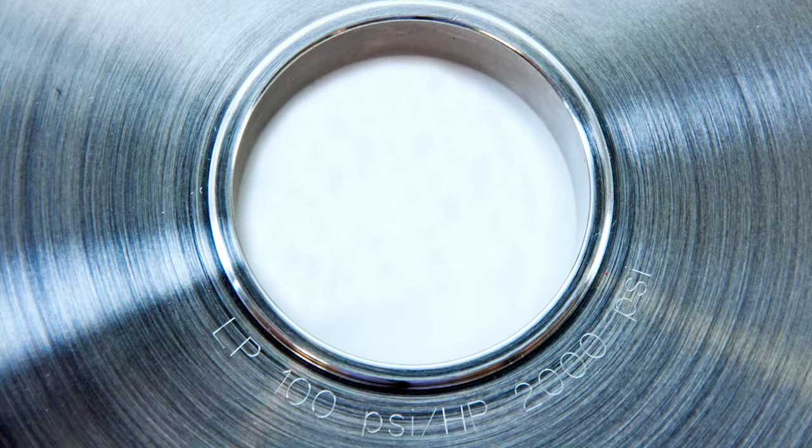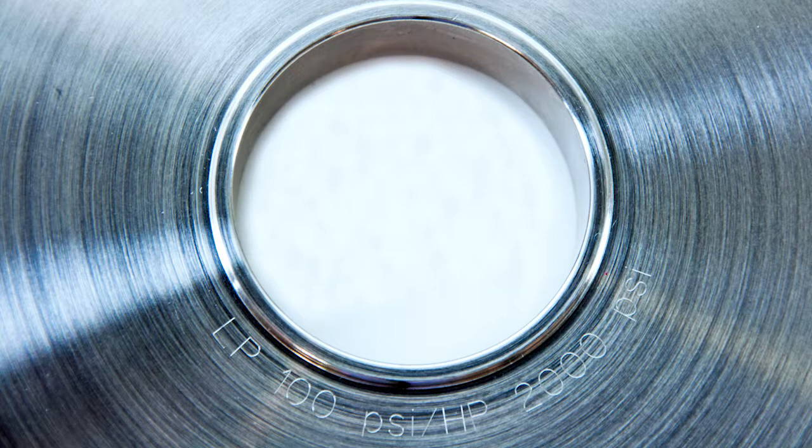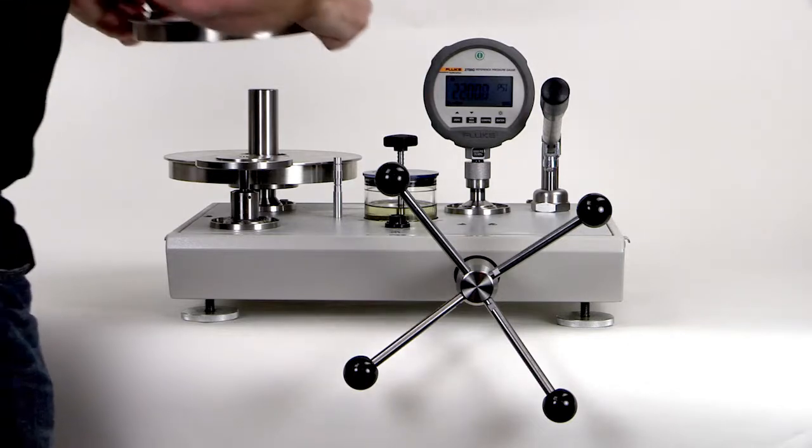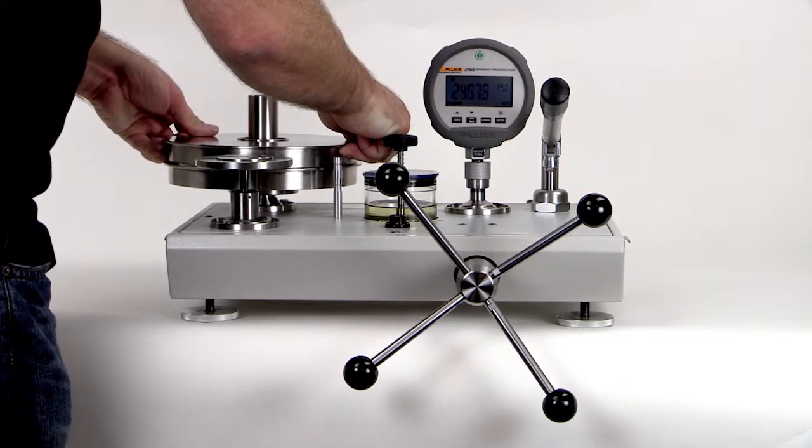The second approach is to perform no calculations at all at the time of use. In this scenario, the masses for the deadweight tester are often marked with their corresponding pressure when used with a particular piston cylinder. You simply add up the values on the masses to determine the pressure being generated.